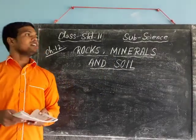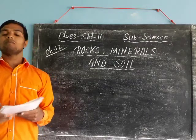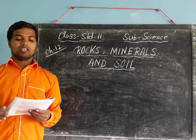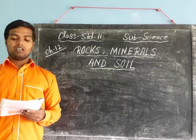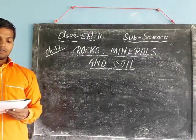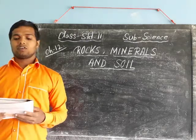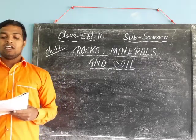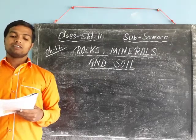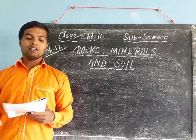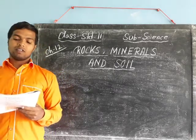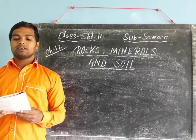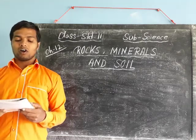The surface of the earth is made up of soil, rocks, and minerals. The rocks are made up of tiny grains. Those grains are called minerals.